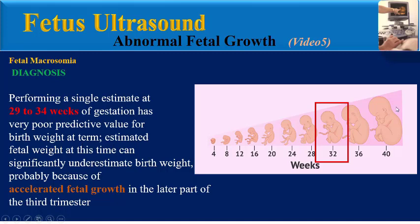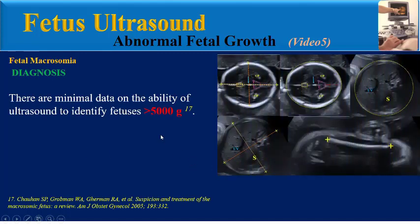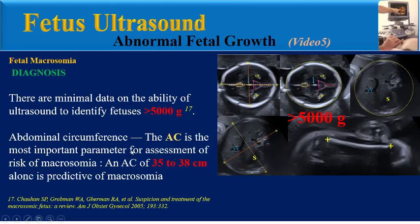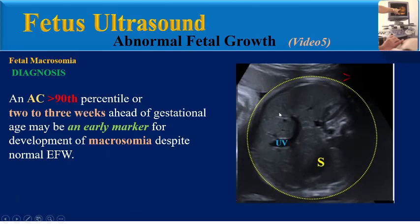Estimated fetal weight at this time can significantly underestimate birth weight, probably because of accelerated fetal growth in the later part of the third trimester. There are minimal data on the ability of ultrasound to identify fetuses more than 5,000 grams. Abdominal circumference is the most important parameter for assessment of risk of macrosomia — an AC of 35 to 38 cm alone is predictive of macrosomia. An AC more than the 90th percentile or 2 to 3 weeks ahead of gestational age may be an early marker for development of macrosomia despite normal estimated fetal weight.